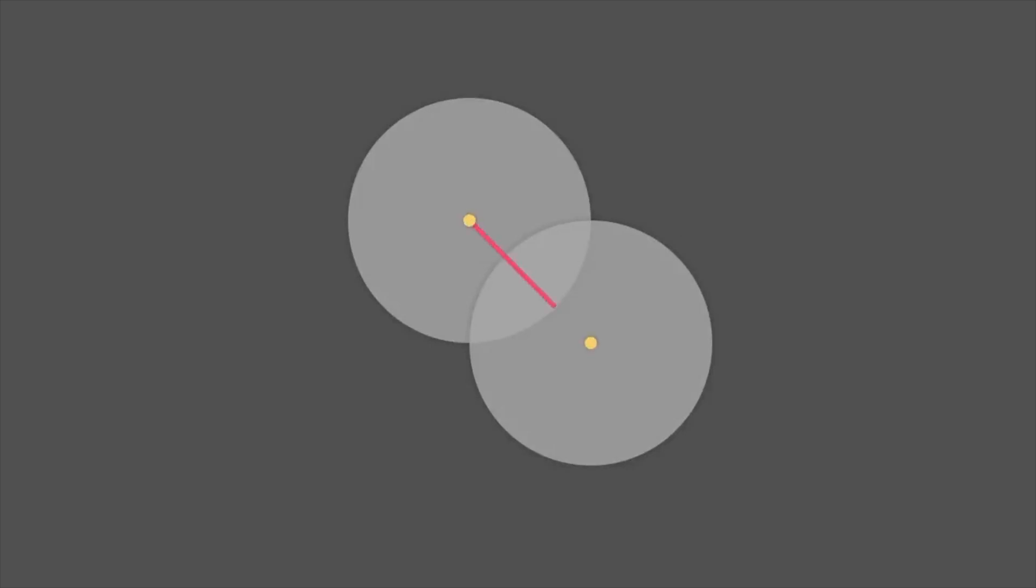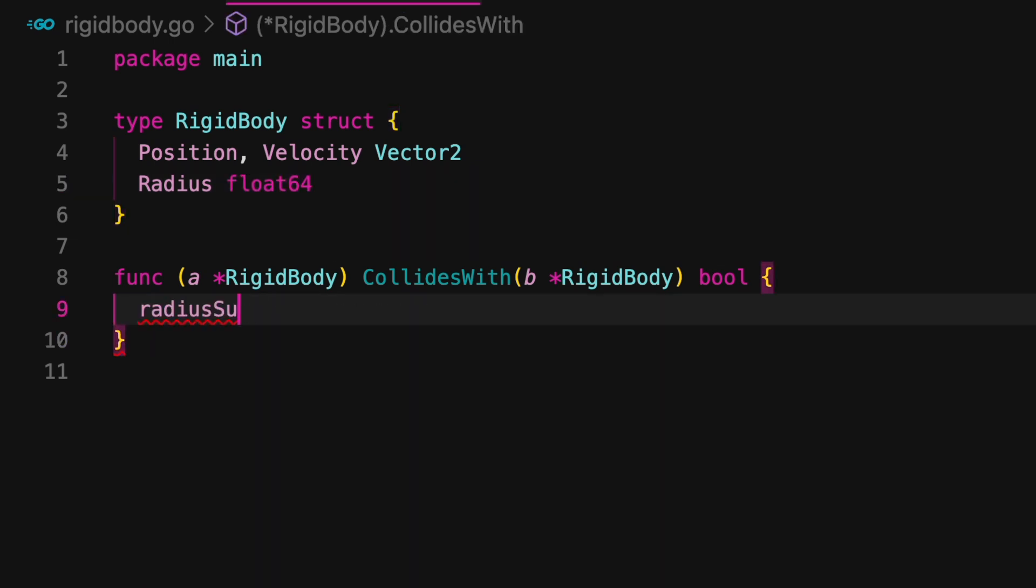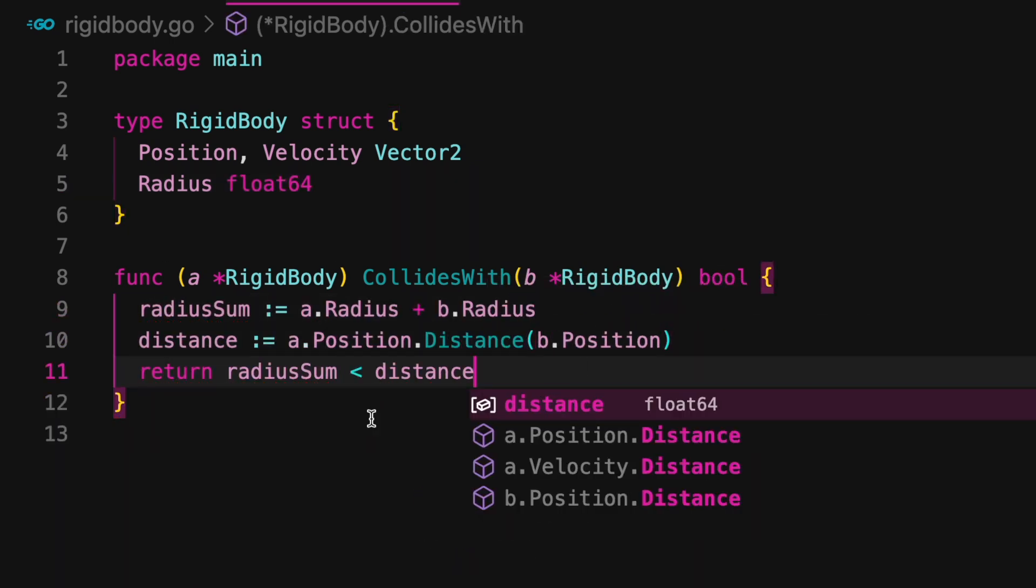If the distance between their center points is larger than the sum of their radii, then they are not touching. Otherwise, if the sum of their radii is larger, then they are touching. We can implement this logic with our collidesWith function, and that's it for detection.